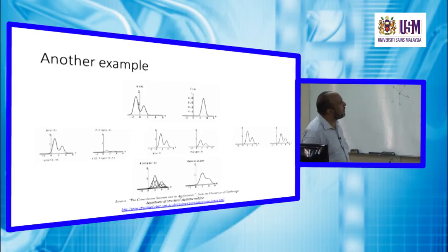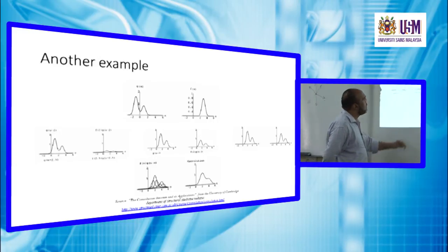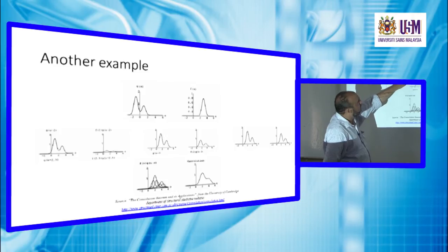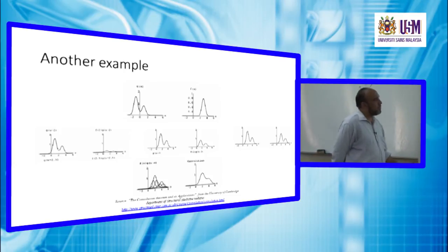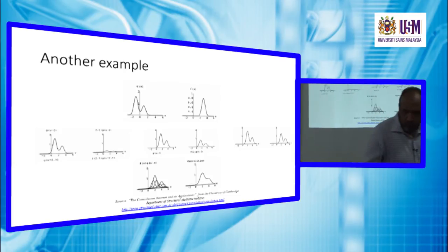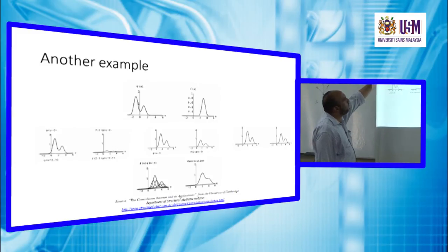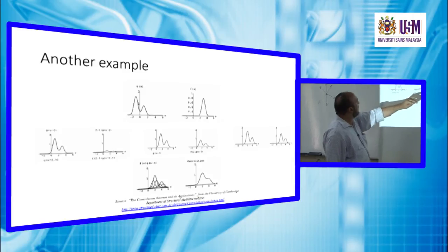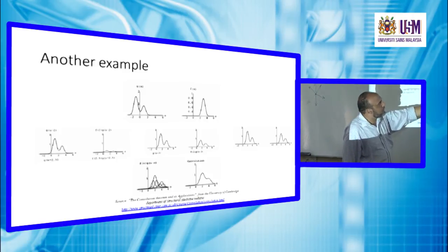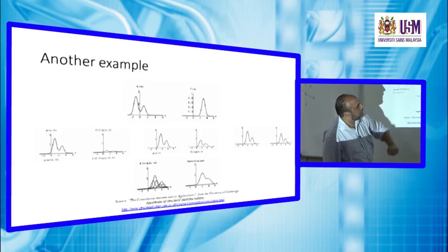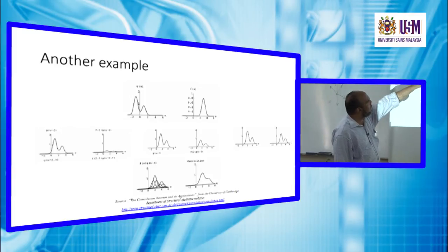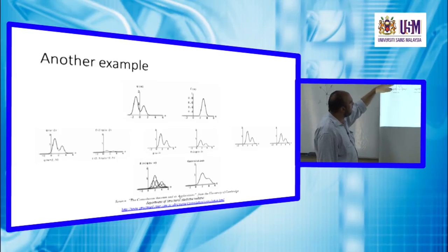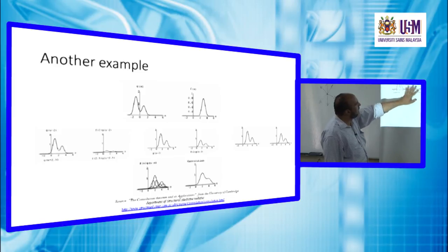Here is another example: suppose I have function g(x) and want to convolve f(x) with g(x). The function g(x) is evaluated at x=2, x=3, and x=4. We see here the position of g(x) after shifting — the shift is applied without flipping because the function happens to be symmetric — and this is the result at each point.